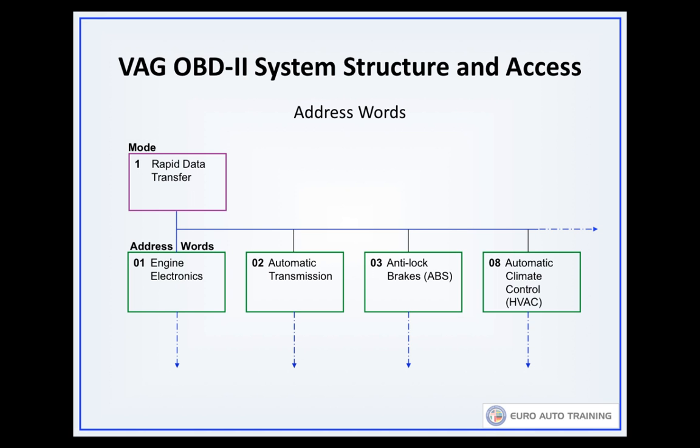Initially, the scan tool will ask you to select what VAG calls the rapid data transfer mode, which may also be described as OBD2 16-pin data link connector or something similar. In that mode, the next step is to select the system you want to investigate by choosing what VAG calls an address word.